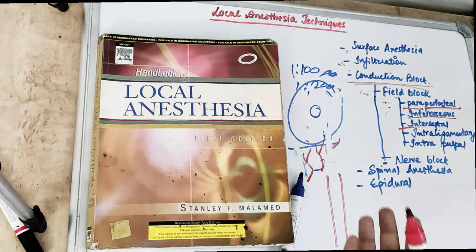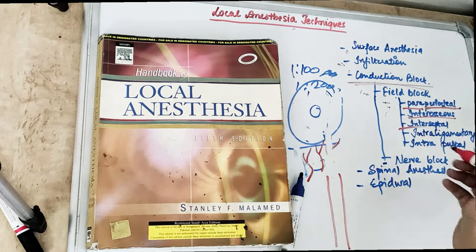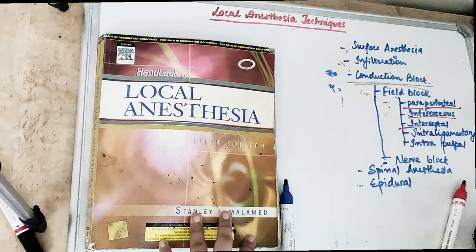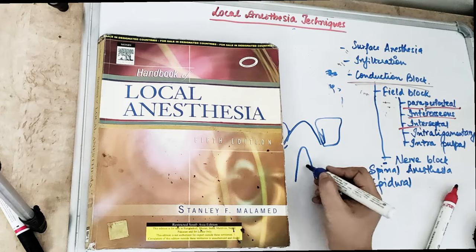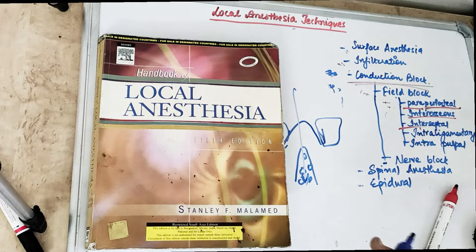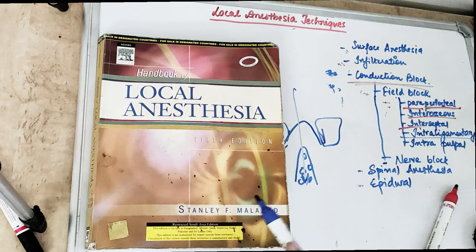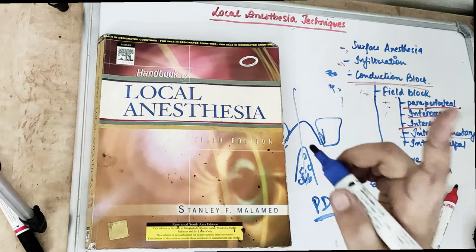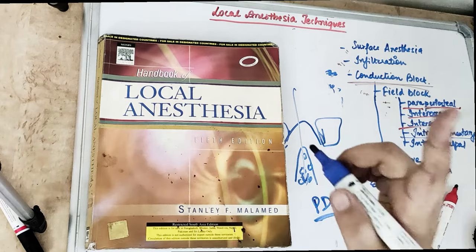Interseptal anesthesia, as the name suggests, is given in between the two teeth in the interseptal bone — mostly used in children or young adults with thin porous bone. Intraligamentary injection anesthetizes via the PDL ligament under high pressure, anesthetizing only a single tooth.